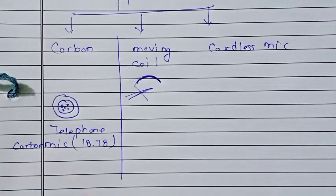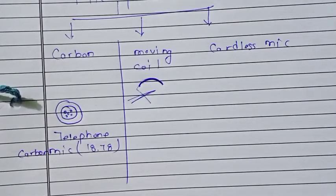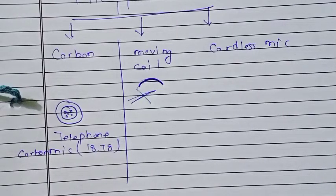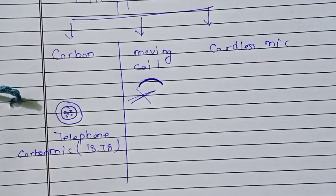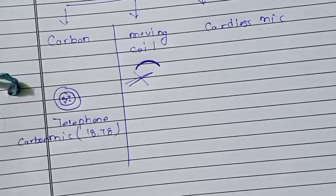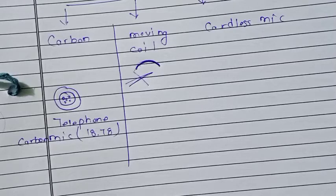The working principle is: a sound signal is applied to the diaphragm, the diaphragm vibrates in the magnetic field, flux changes, and by electromagnetic induction an EMF is induced. This is how the moving coil microphone operates.